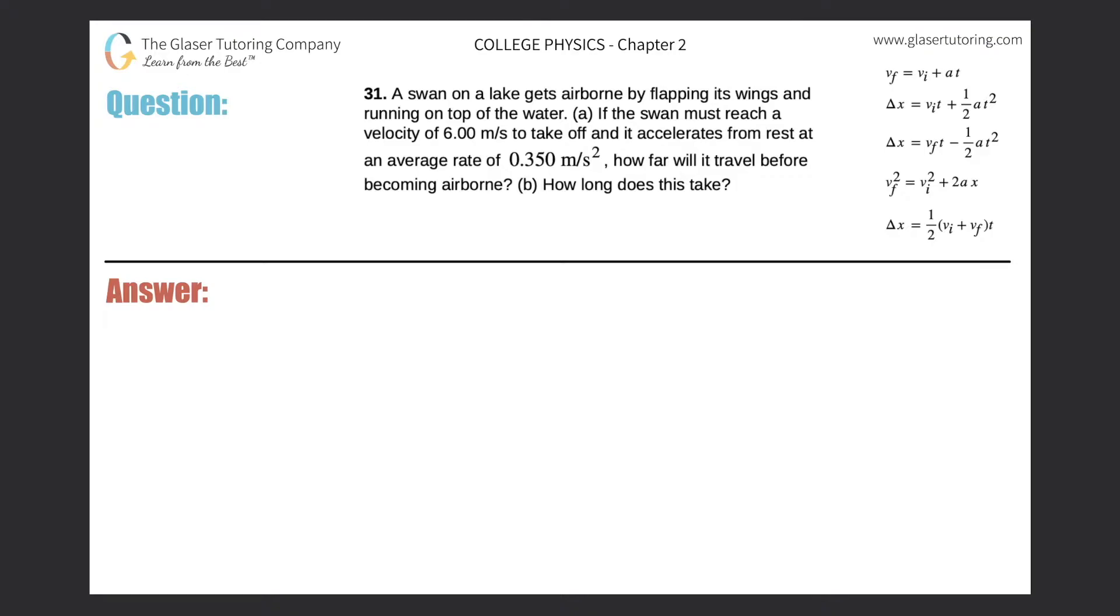Number 31. A swan on a lake gets airborne by flapping its wings and running on top of the water. If the swan must reach a velocity of 6 meters per second to take off, and it accelerates from rest at an average rate of 0.35 meters per second squared, how far will it travel before becoming airborne?